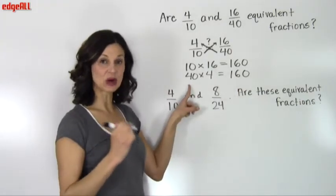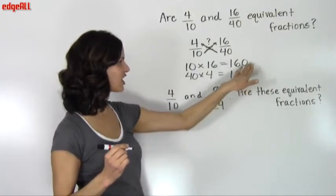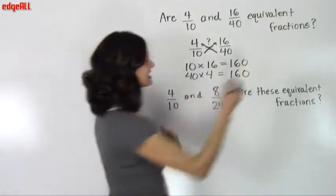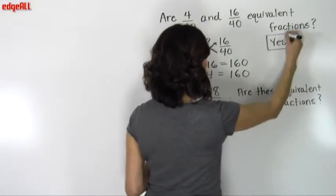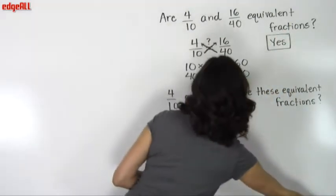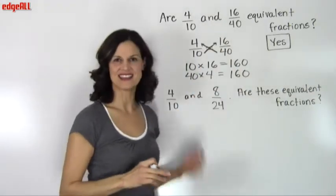So since the product of these two cross multiplications are equivalent or equal to each other, I can say that yes, these two fractions are equivalent fractions. And I'll erase my little question mark because I know now that these two fractions are equivalent.